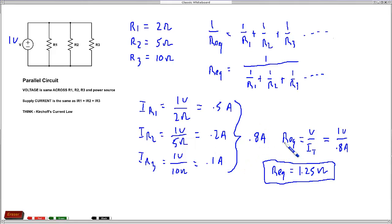We added all those currents together and that gave us the total current right here. Then we divided that current into the test voltage that we put in, which was 1 volt. And we came up with our REQ is 1 volt divided by 0.8 amps, which is 1.25 ohms.